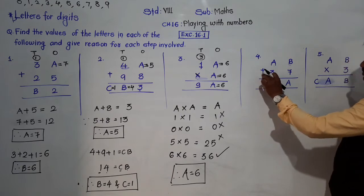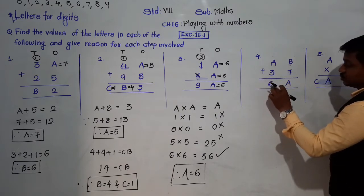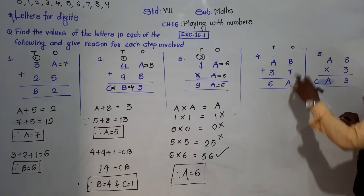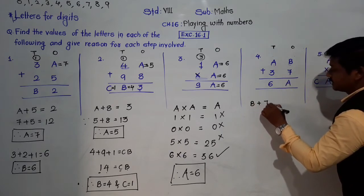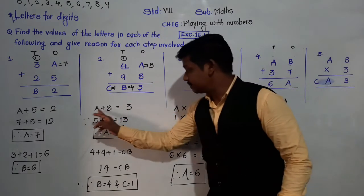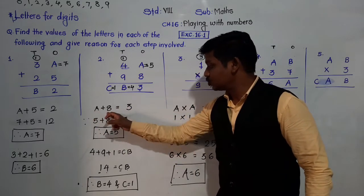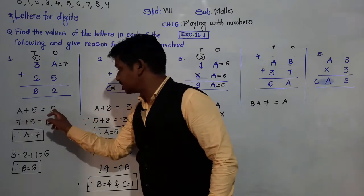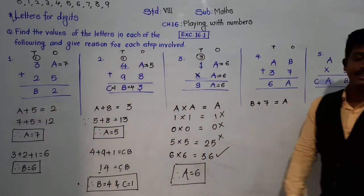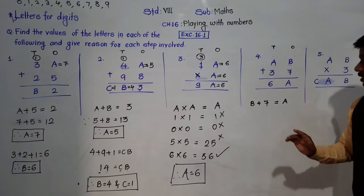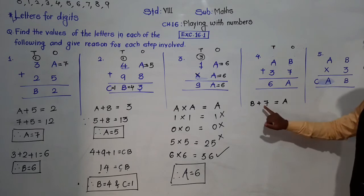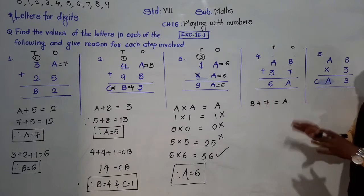Example 4 is addition: AB + 37 = 6A. In the 1's place there is B + 7 = A. Here we have two letters and one digit, so we cannot guess directly. There are two unknowns, so we move to the 10's place.